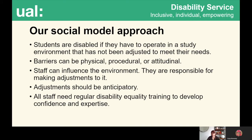So first of all, what do we mean by our social model approach? Students may have impairments, conditions, or specific learning differences, but they are only disabled if they have to operate in a study environment that has not been adjusted to meet their access needs. Barriers in the study environment could be physical, procedural, or attitudinal.